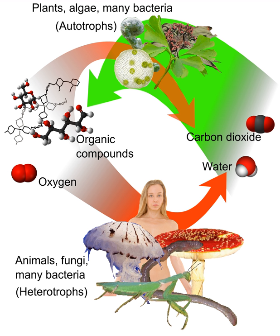Heterotrophs can be organotrophs or lithotrophs. Organotrophs exploit reduced carbon compounds as electron sources, like carbohydrates, fats, and proteins from plants and animals. On the other hand, lithotrophs use inorganic compounds, such as ammonium, nitrite, and sulfur to obtain electron sources.